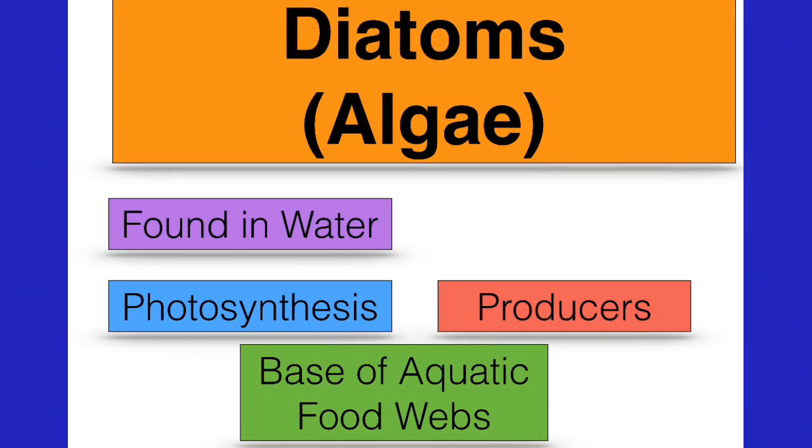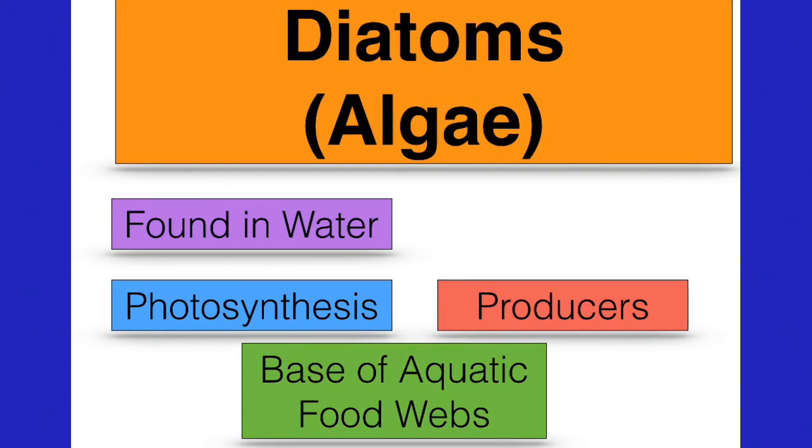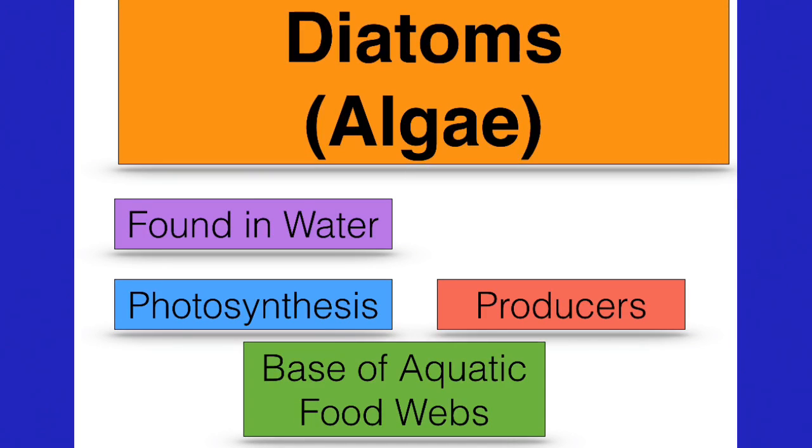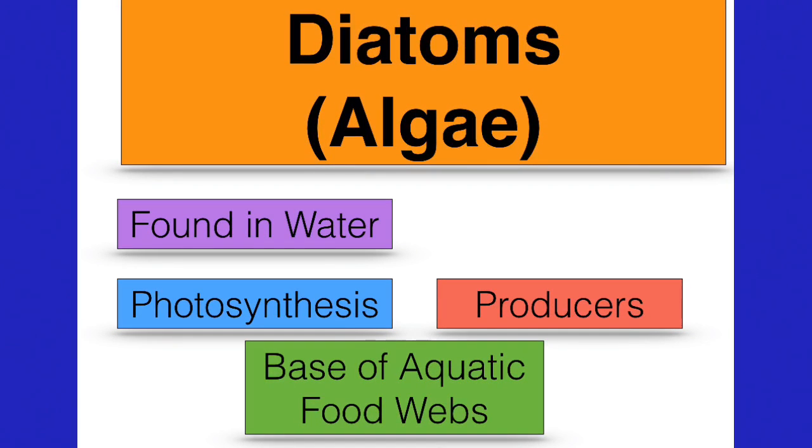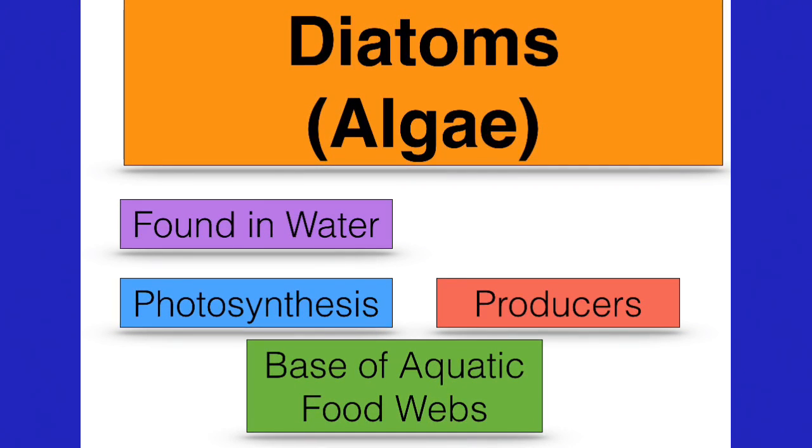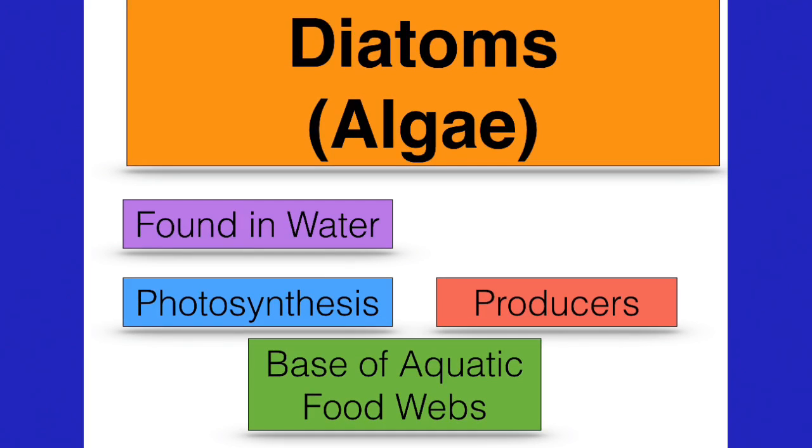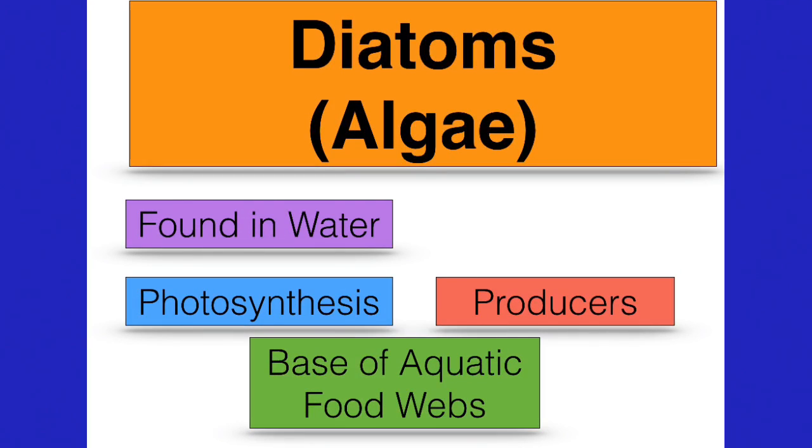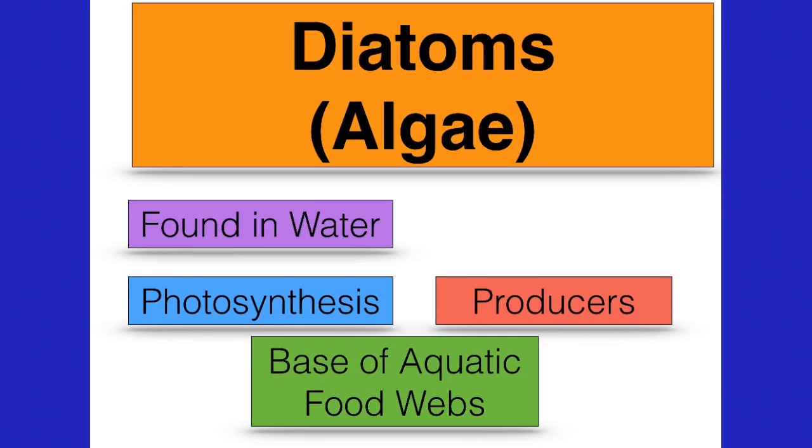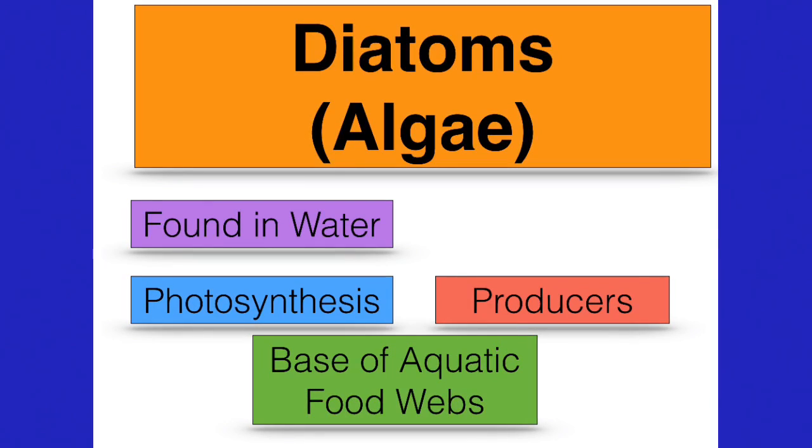I just want to introduce you to these organisms known as diatoms. They're part of the protista kingdom and there are thousands of species of diatoms. They're a type of microalgae. They photosynthesize and they are found in all of the oceans. And so because they photosynthesize, they are producers and they form the base of many aquatic food webs.